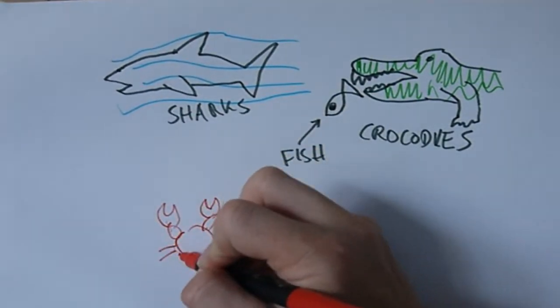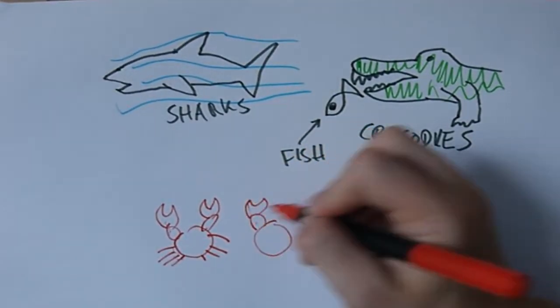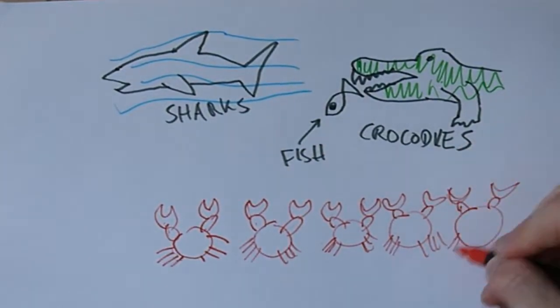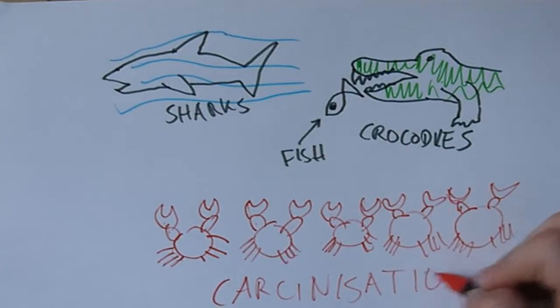In particular, crabs have evolved independently at least five times from decapod crustaceans, so many times that we have a name for the process of evolving a crab: carcinisation. But what if your alien planet doesn't possess these same environments?